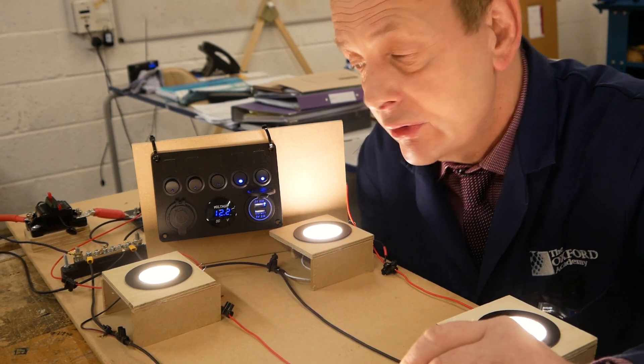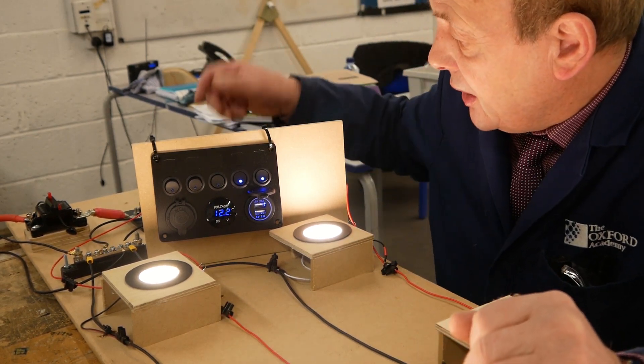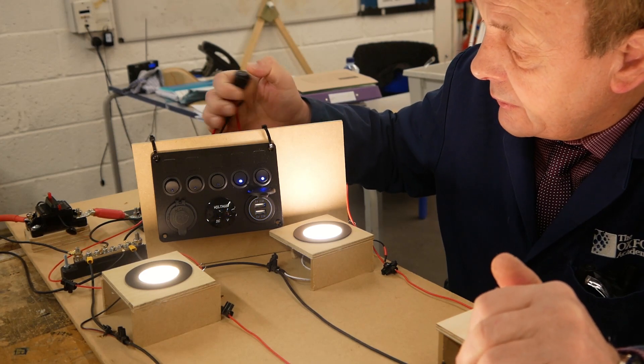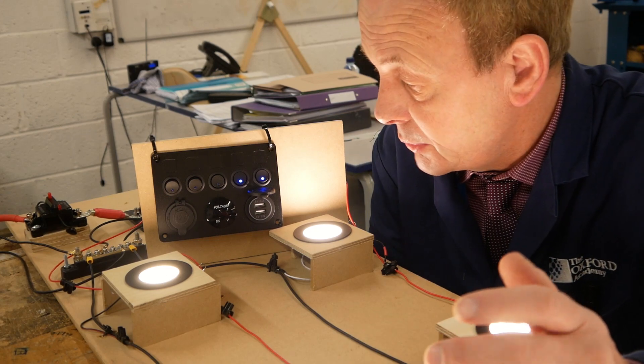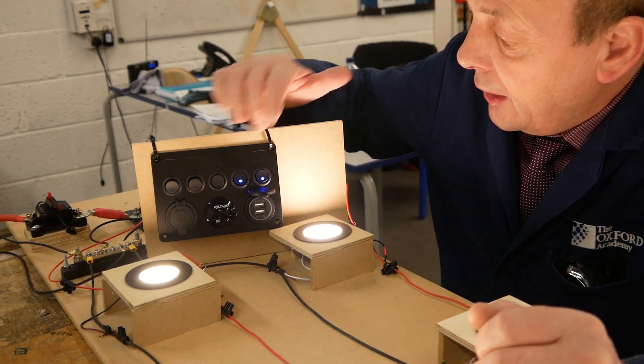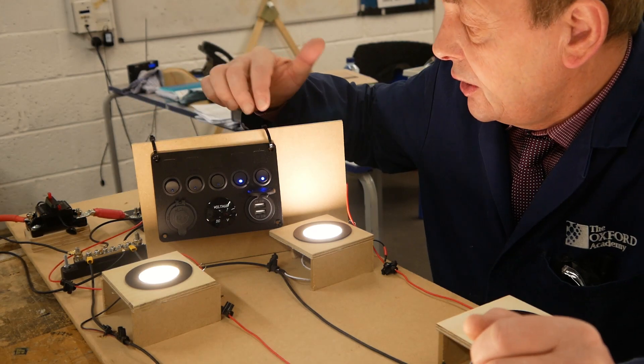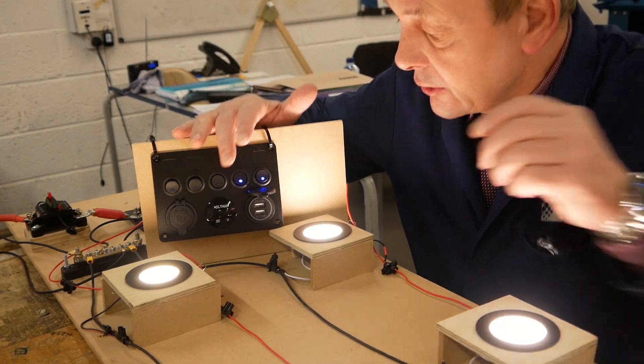In episode two we took a look at the control panel and how we can isolate it, especially these three charging points which are permanently live but now they're not, and these two circuits here which are lighting circuits linked directly to the fuse box.